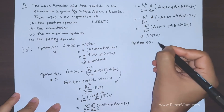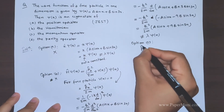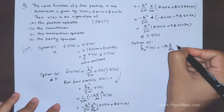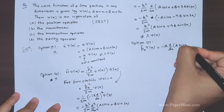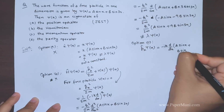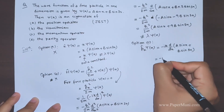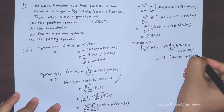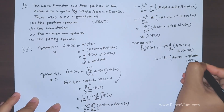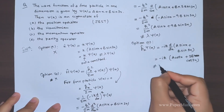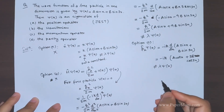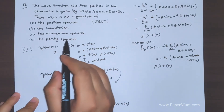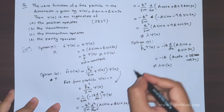Option C: the momentum operator p̂ = -iℏ·d/dx operating on ψ(x) = a·sin(x) + b·sin(3x). Differentiating once gives a·cos(x) + 3b·cos(3x). This does not give back the original wave function, so ψ is not an eigenfunction of the momentum operator. This option is also incorrect.